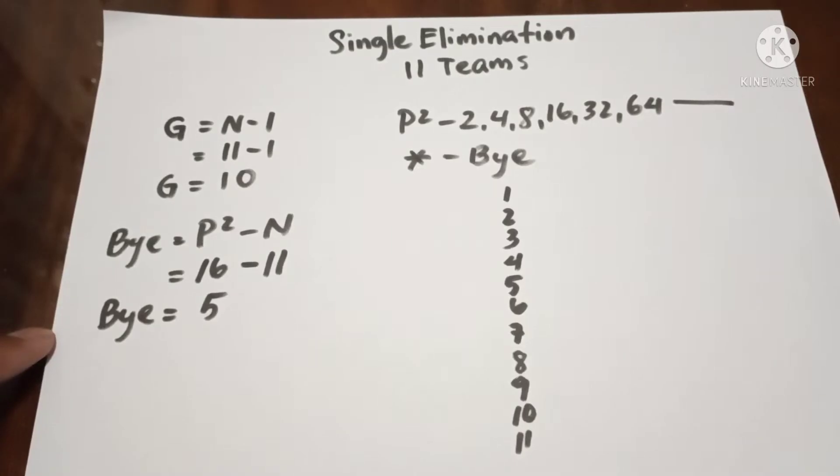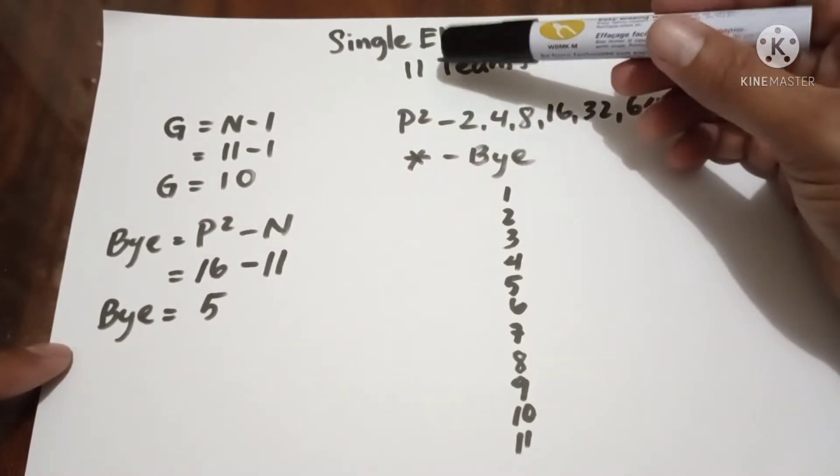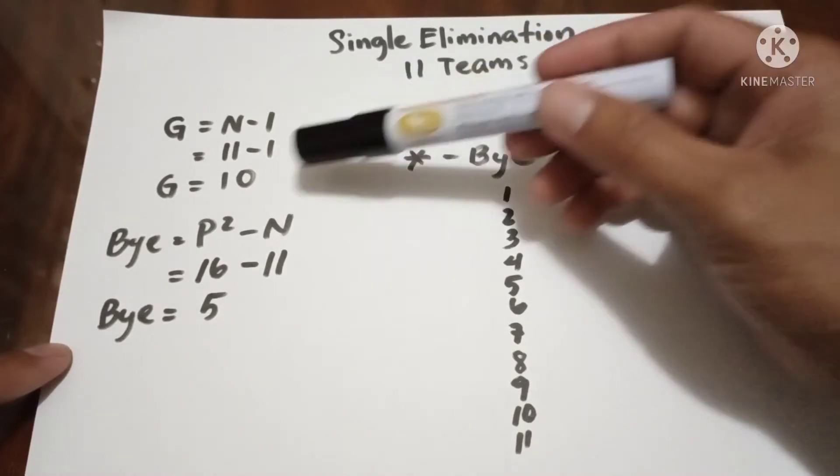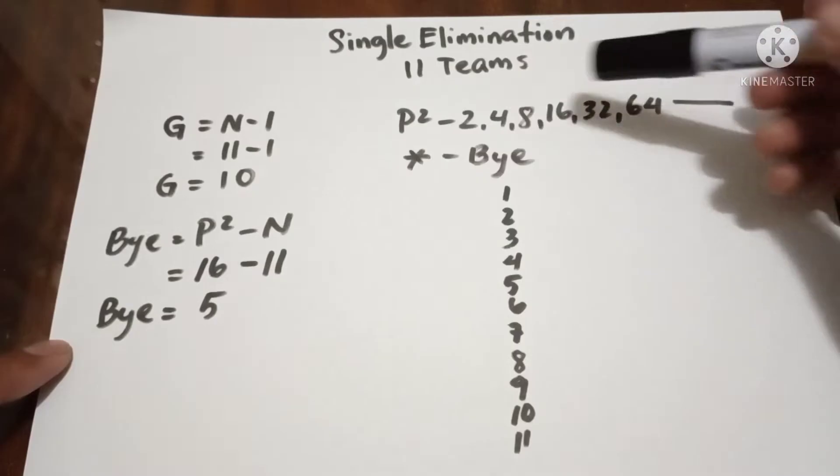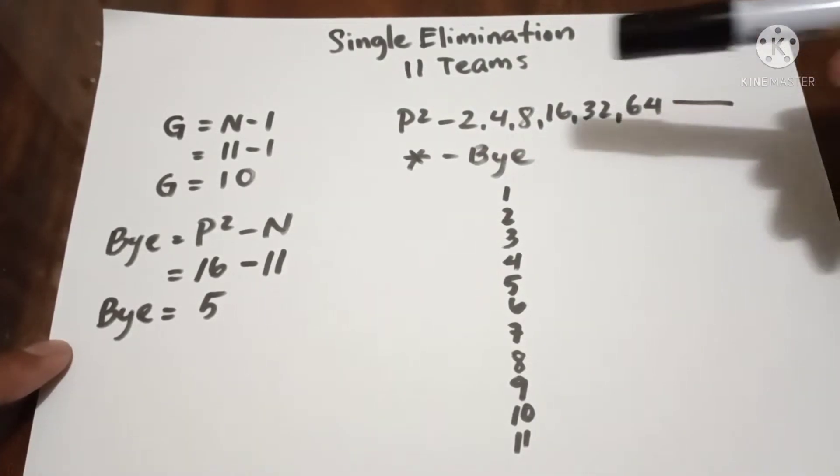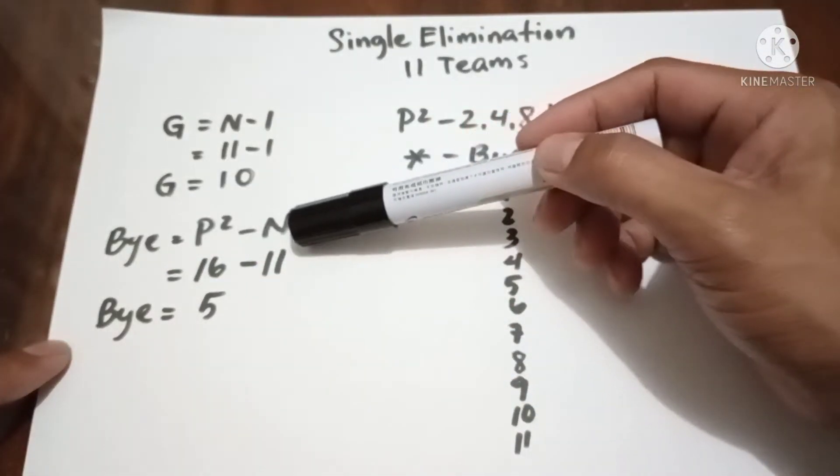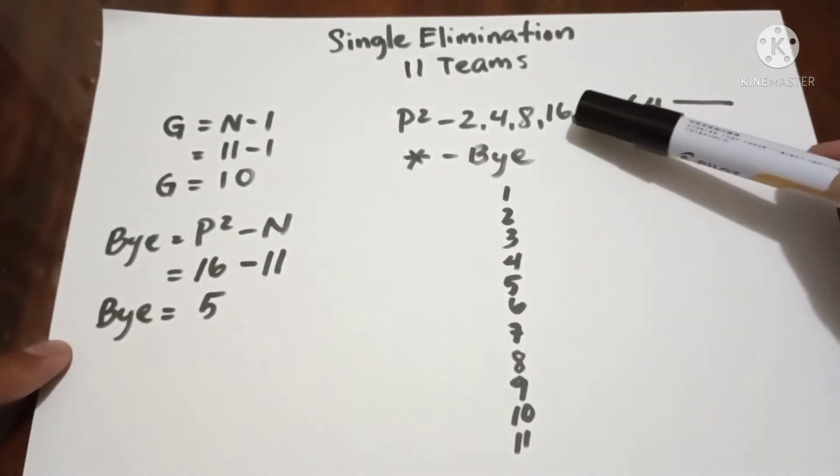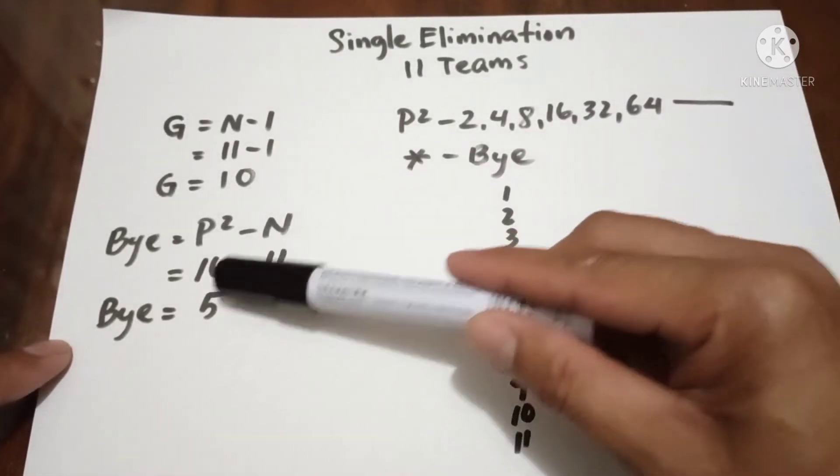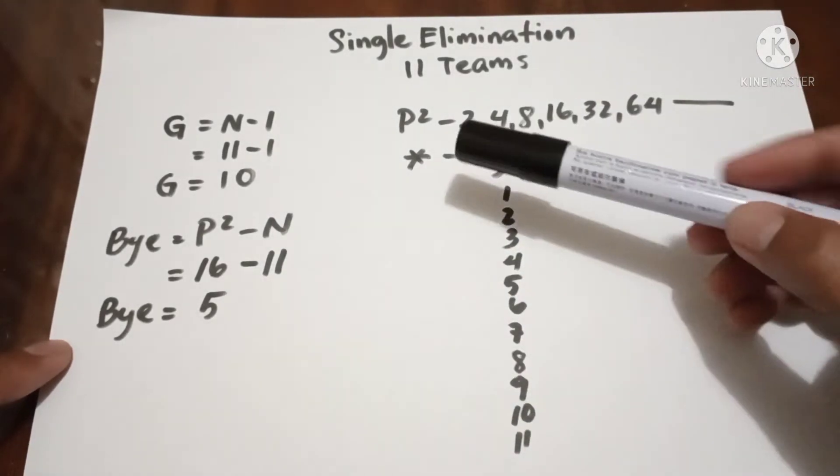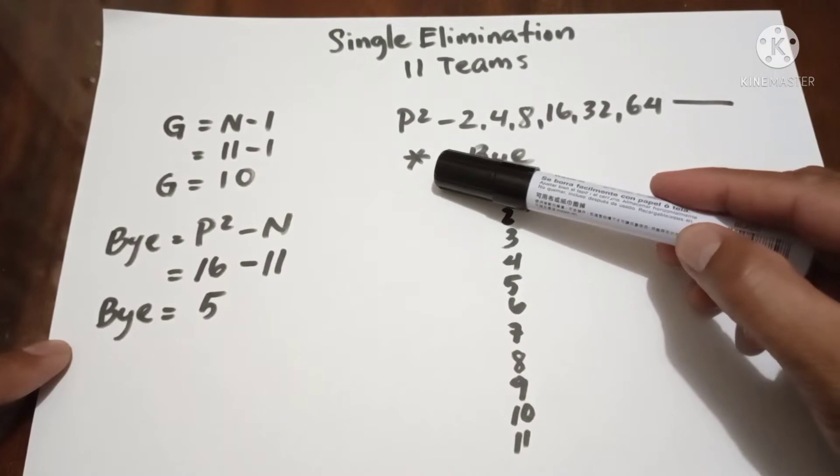Hello everyone, this is single elimination for 11 teams or 11 number of entries. In 11 teams we have 10 games. Since 11 is not included in the power of twos, we have bye. To determine the bye, we have Bye equals power of 2 minus N. The next higher power of 2 to 11 is 16, so 16 minus 11 equals 5, meaning we have 5 byes.